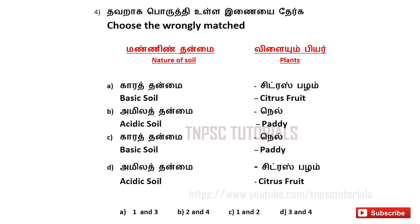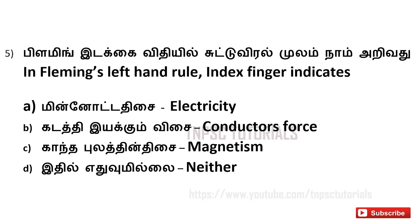Fourth one, choose the wrongly matched. 1. Basic soil, 2. Acidic soil, 3. Basic soil, 4. Acidic soil — with plants Papaya, Sugarcane, Citrus fruit, Paddy. Options: A. 1 and 3, B. 2 and 4, C. 1 and 2, D. 3 and 4. And the answer is C, 1 and 2.